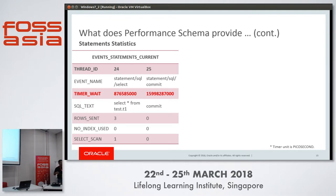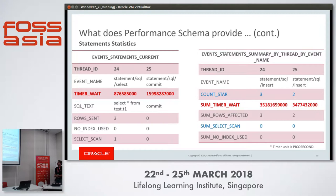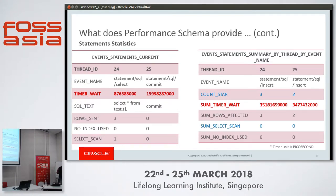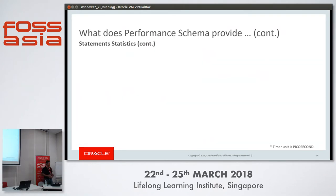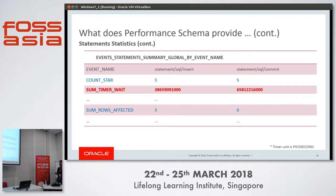Now suppose I want to see a summary of all statements executed by any thread. We have events_statement_summary_by_thread_by_event_name, giving a consolidated summary by specific thread. For thread ID 24, three INSERT statements were executed with a total time of X. For thread ID 25, two INSERT statements were executed with a total time of Y. And we have events_statement_summary_global_by_event_name — querying that, I can see that overall on the server five INSERT statements have been executed with a combined time, and five COMMIT statements have been executed with their combined time.